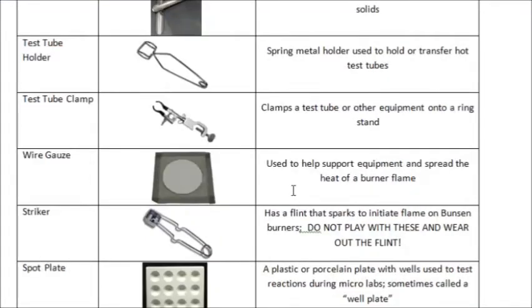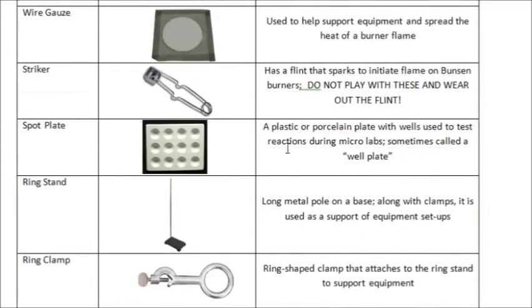Wire gauze is what we use when heating things up and we want to put a beaker or Erlenmeyer flask on there. Strikers are what you use to light your Bunsen burners. Spot plates, also called well plates, are used to test types of reactions and are good to see comparisons right next to each other.